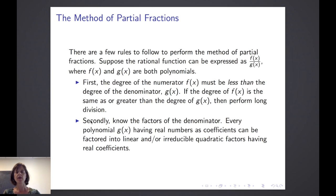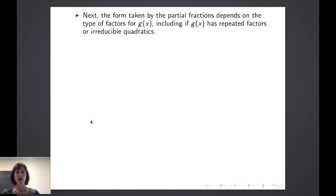Secondly, we have to know the factors of the denominator. Every polynomial g(x) having real numbers as coefficients can be factored into linear and/or irreducible quadratic factors having real coefficients. Next, the form taken by the partial fractions depends on the type of factors for g(x), our denominator, including if g(x) has repeated factors or irreducible quadratics.